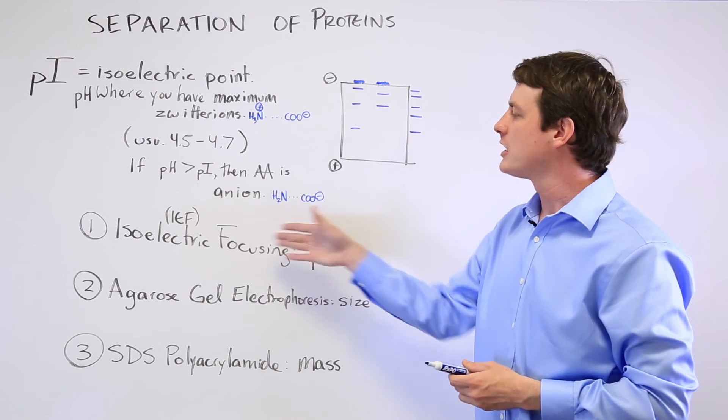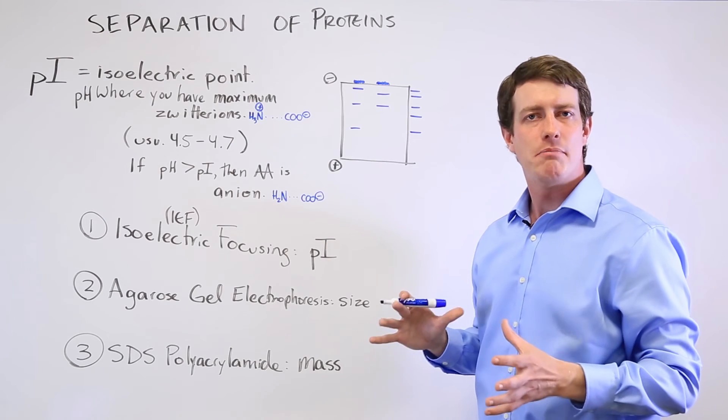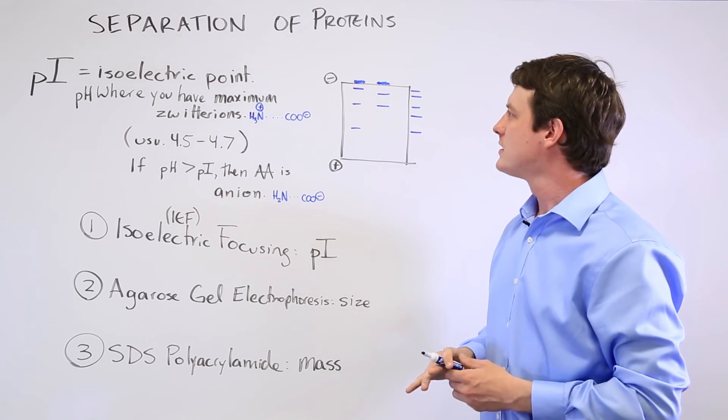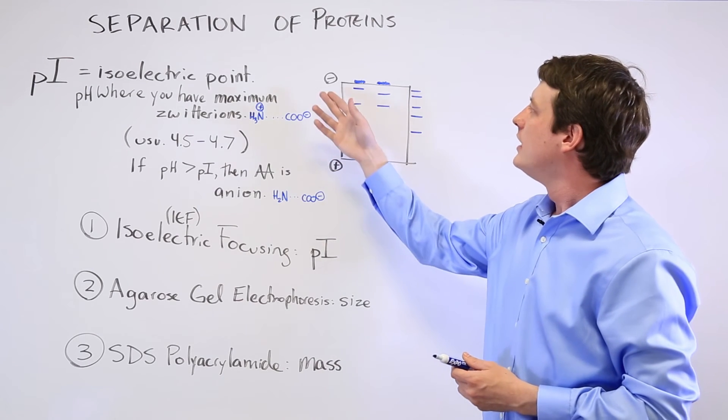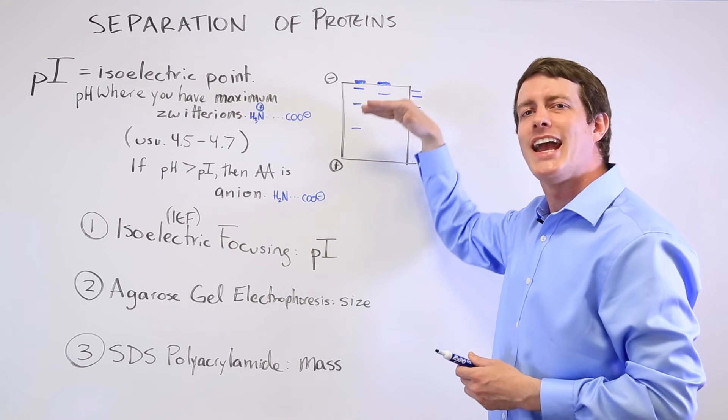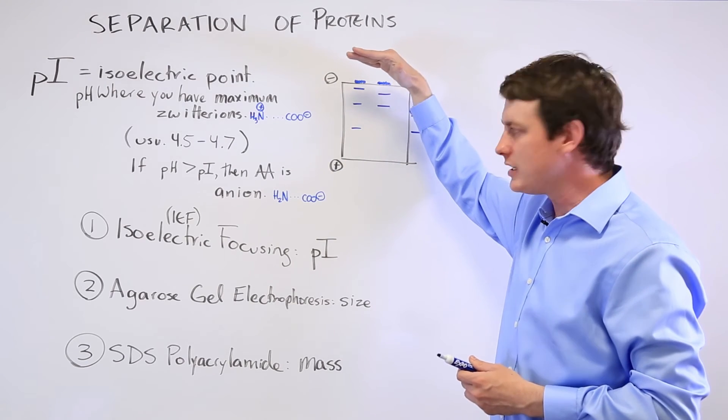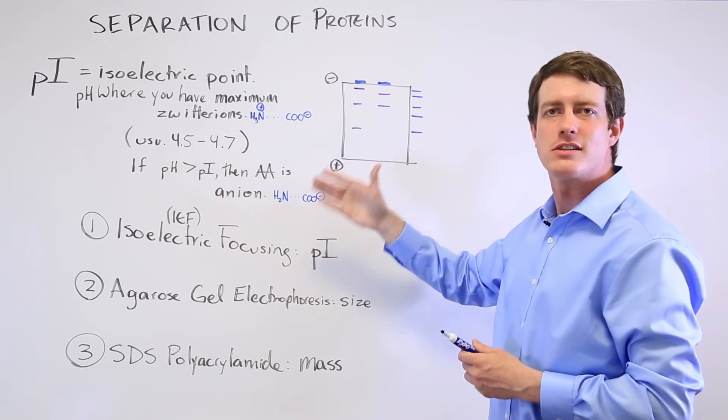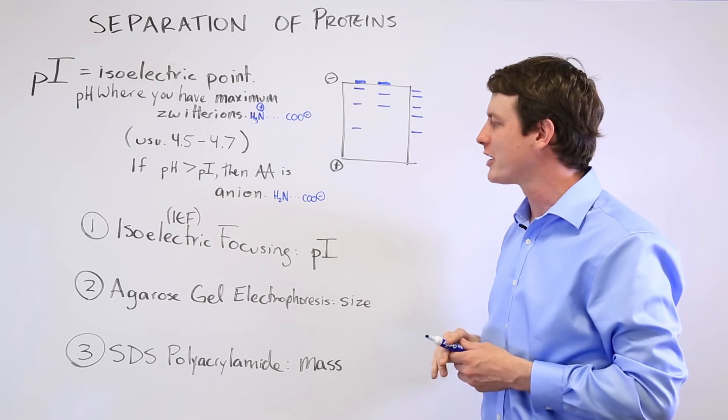And so if you see isoelectric focusing, that's being separated by the pI, the isoelectric point. And it's taking advantage of the fact that you have a negative charge up here, a positive charge down here, and the negatively charged proteins will thus move through this gel until it reaches its zwitterion state where it stops being attracted in either direction.